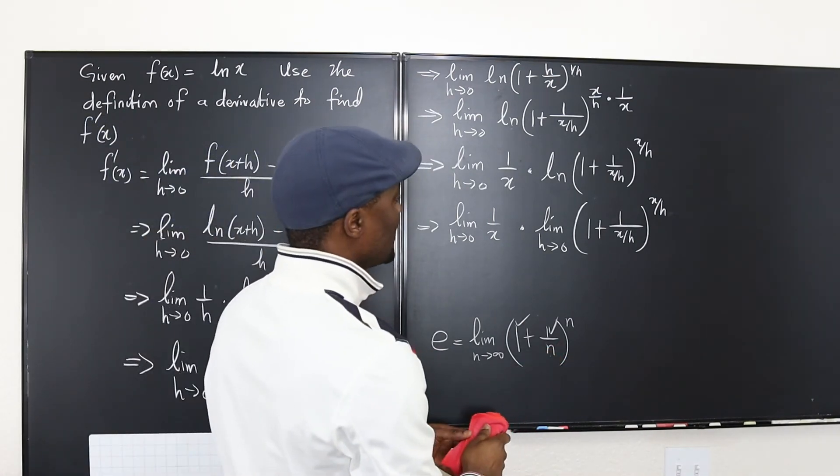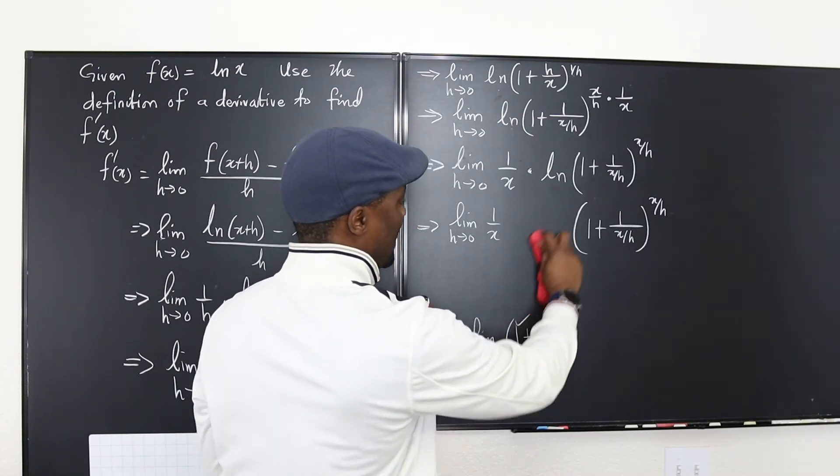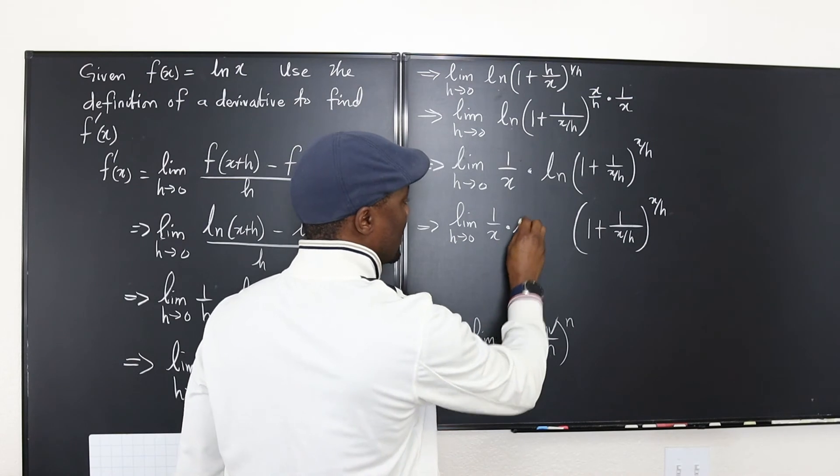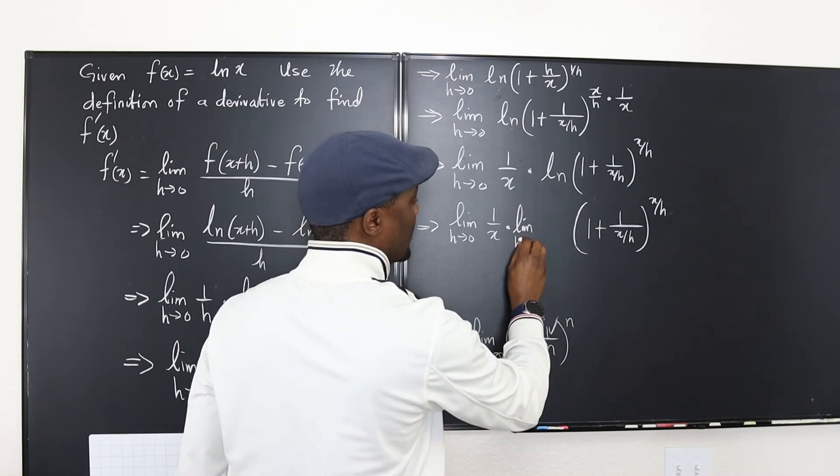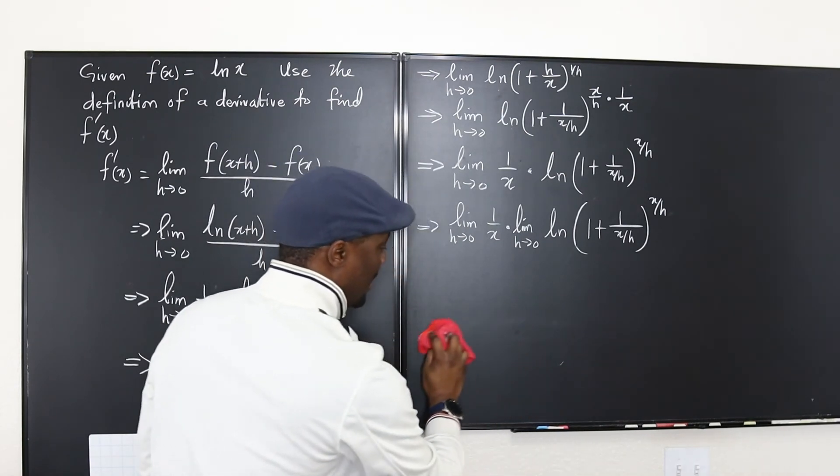Where is the natural log sign? Sorry. I forgot to write that. It's supposed to be multiplied by the limit as h goes to 0 of ln. Here we go.